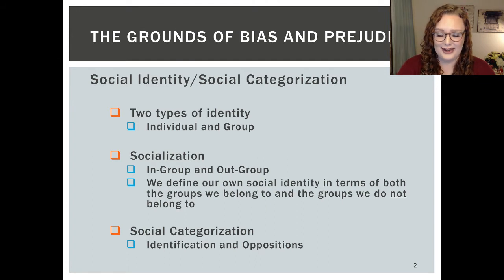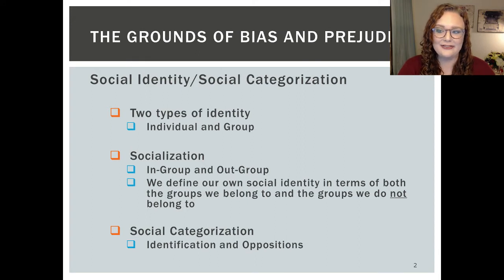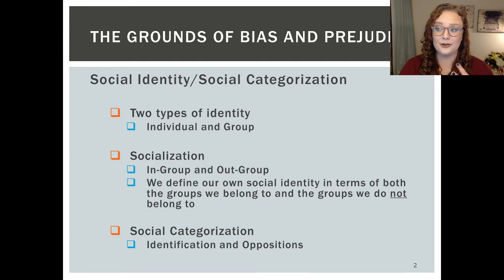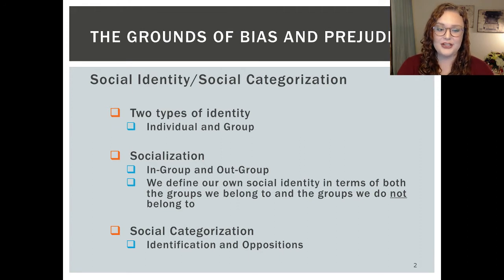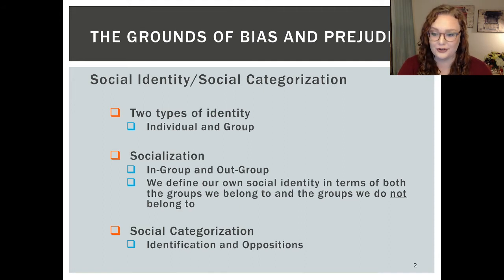Write this down — this is important. Social identity theory tells us that we define our own social identity in terms of both the groups we belong to and the groups that we do not belong to. Moving past socialization, we get to social categorization — this is the process of determining which groups people belong to.